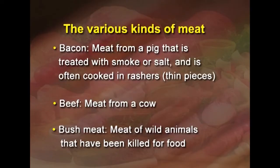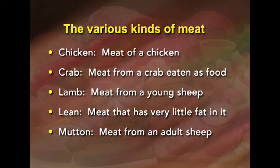The various kinds of meats are: bacon, which is meat from a pig treated with smoke or salt and often cooked in rashers; beef, which is meat from cow or buffalo; bush meat, which is meat of wild animals killed for food; and chicken, which is meat of chicken.